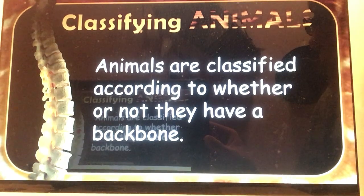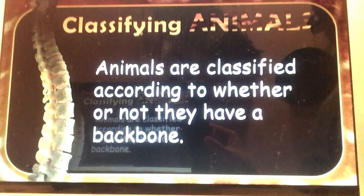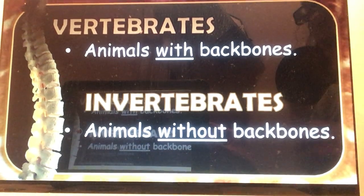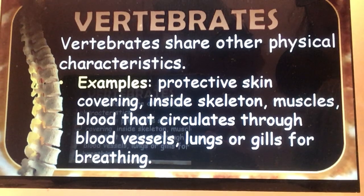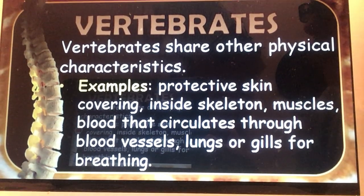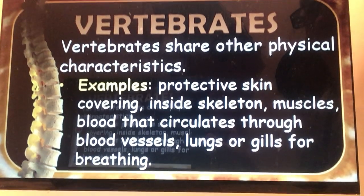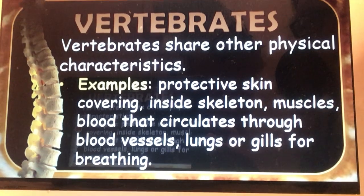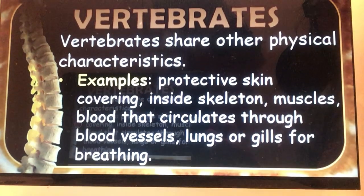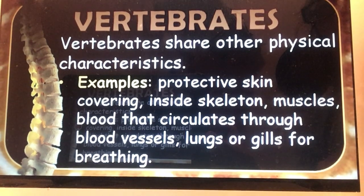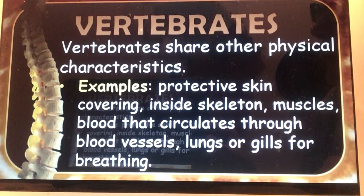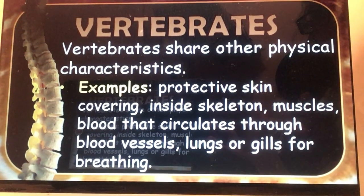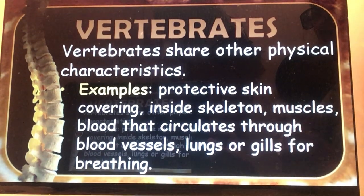Animals are classified by whether or not they have a backbone. We have vertebrates, which are animals with a backbone, and invertebrates, which are animals without backbones. Vertebrates also share other similar characteristics: they have protective skin, skeletons on the inside, muscles, lungs or gills for breathing, and blood vessels. Basically, we humans are vertebrates — all the things we discussed in the human body unit apply here.